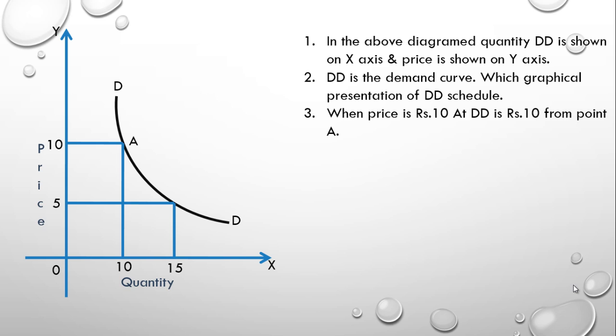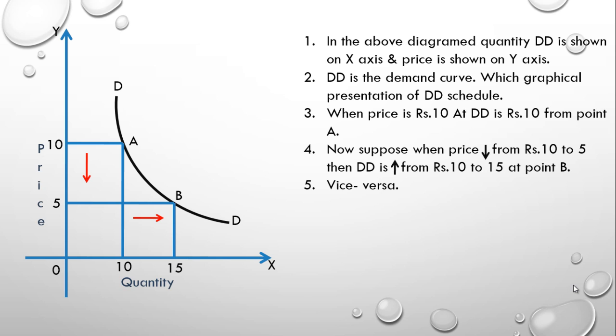Let us write that thing down. Now suppose when price decreases from rupees 10 to 5, the demand increases from 10 to 15. I am drawing an arrow which will make it more clear - the price decreases from 10 to 5, the demand increases from 10 to 15. Vice versa, the quantity has shrunk from 15 to 10. When will this happen? When and when the price will increase from 5 to 10. Therefore, conclusion: when price increases, demand decreases, and when price decreases, demand increases. This is law of demand.